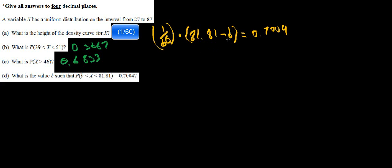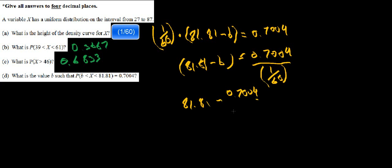Now, it's just a matter of solving for B. So we do this value over here, divided by 1 over 60. Then we rearrange it again and have 81.81 subtract 0.7004 divided by 1 over 60, which is going to be the height. And all of this would give you the answer B.